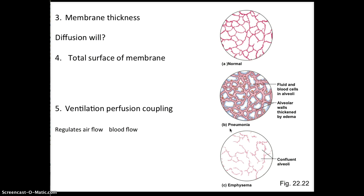Also important is the total surface area of the membrane, which is affected in emphysema. In emphysema, confluent alveoli form — we lose small alveoli and get fewer, larger ones. Larger alveolar size means our surface area shrinks. As demonstrated with the jar-of-marbles analogy: small marbles create more surface area in the same jar than large marbles.